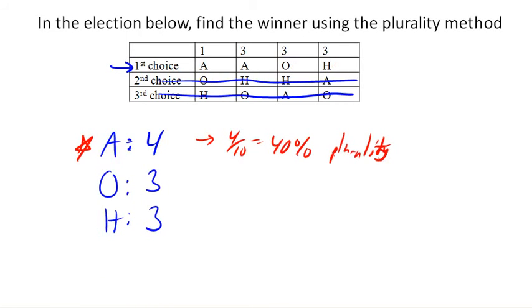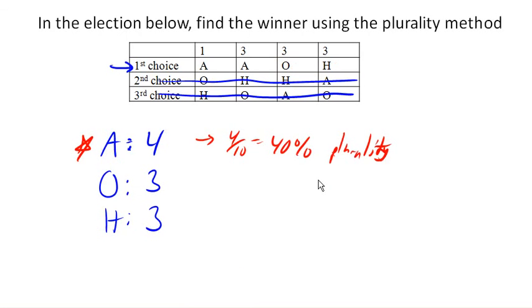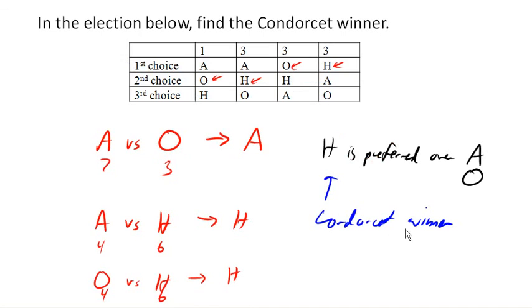So in this case, because H is preferred over all other candidates, we call H the Condorcet winner, or the Condorcet candidate. And in this case, plurality method did not choose the Condorcet winner. Now not every election has one, but this one does. And so this is what we call a violation of a fairness criteria. And this is called the Condorcet criteria.